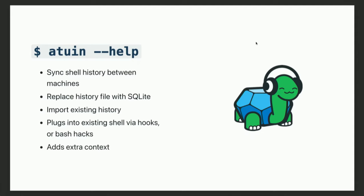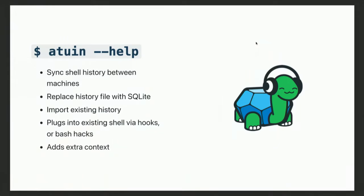Atuin was built to solve that problem. First, we replaced the shell history file — your bash history, zsh history, whatever — with a SQLite database. It was plugged into the shell via shell hooks; most shells provide a way to plug into their lifecycle. The notable exception is bash, which has very poor plugin capabilities, though we do support it via some hacks. Because this is a database and not a flat file, we can also record additional context: the directory a command was run in, how long it took, whether it exited successfully, and so on.